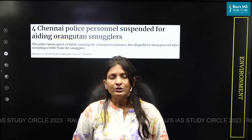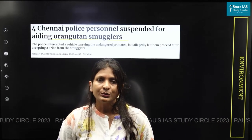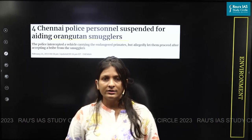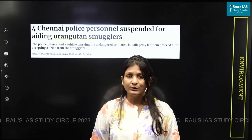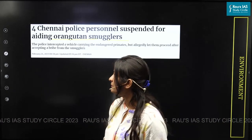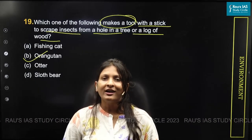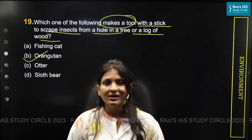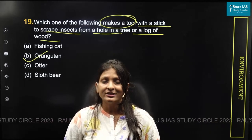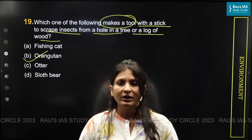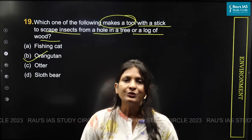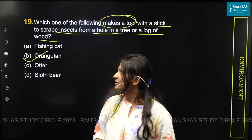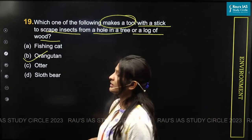If you don't know the answer to this question, you can solve it through your basic understanding. For making a tool, we need a hand with supported fingers and intelligence. Primates have these qualities, so we can easily guess the answer — orangutan.